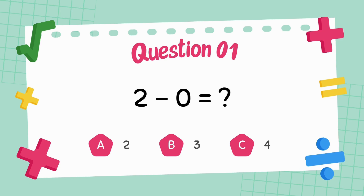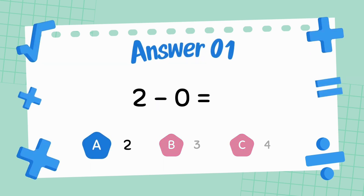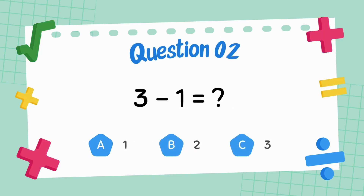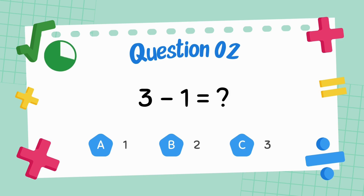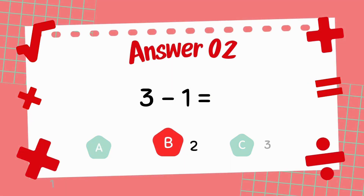What is 2 minus 0? The answer is 2. What is 3 minus 1? The answer is 2.